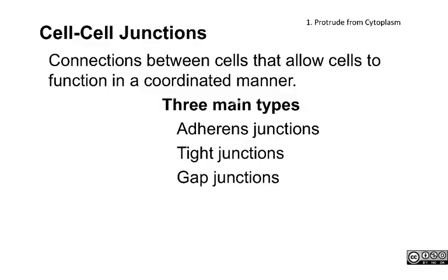Then we have cell-cell junctions. These are proteins that stick out of the cell and allow cells to connect to one another. They are part of what allows multicellular organisms to build tissues. Our cells can stick to one another and form tissues because of three types of junctions. A junction is an intersection or a joining place. So we have adherens junctions — think adhesive. Tight junctions — think zipper. Gap junctions — think essentially a channel from one cell to the next.